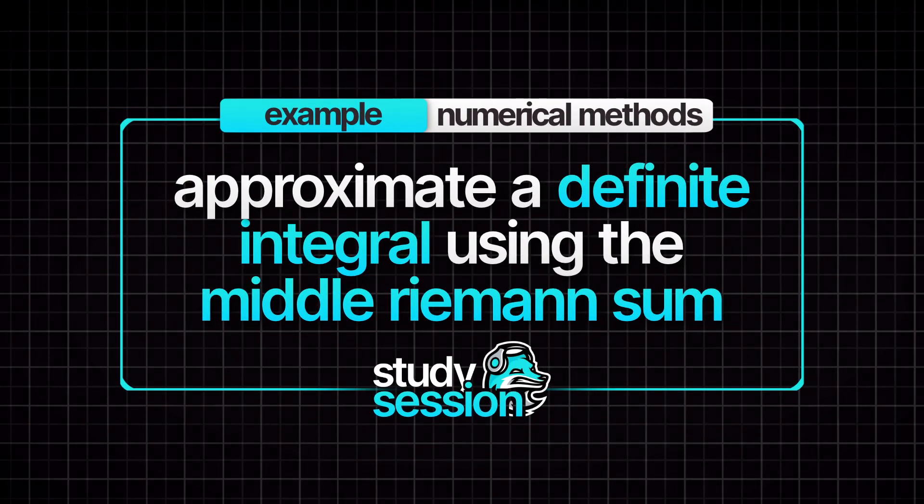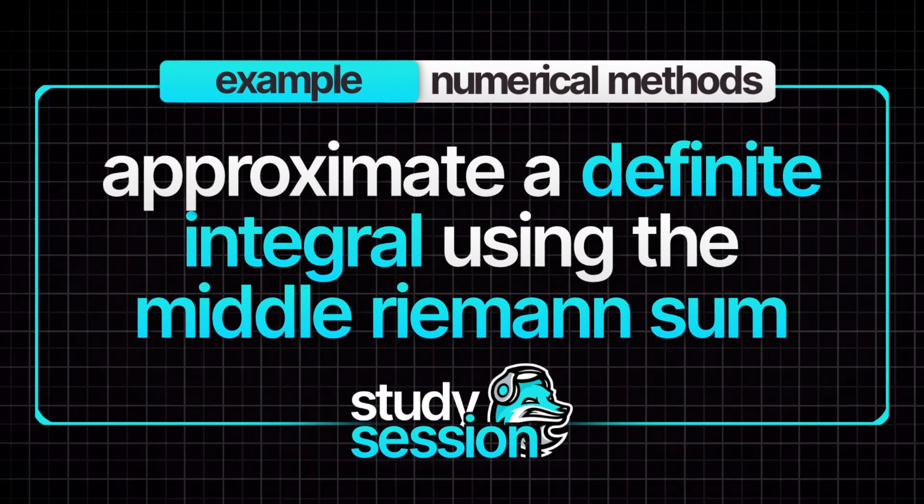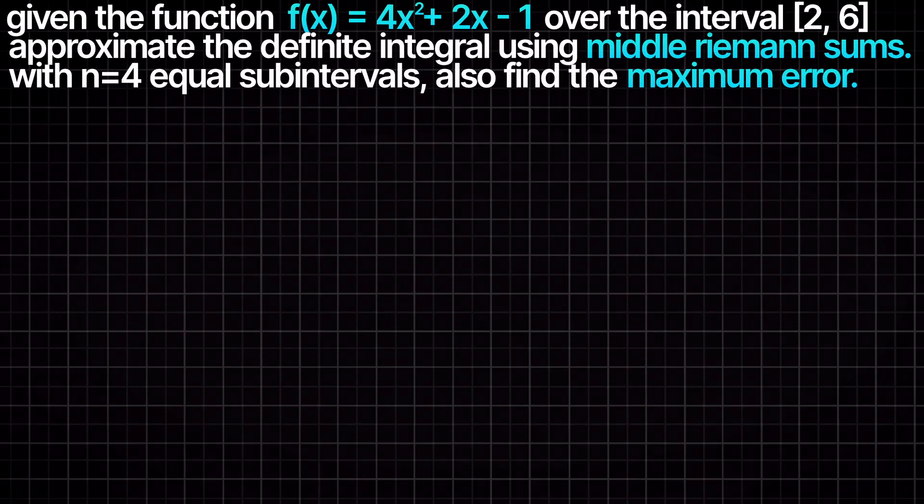Hey everyone, in this example video we are asked to approximate the definite integral of the function 4x squared plus 2x minus 1 over the interval of 2 to 6 using the Riemann sum method with 4 equal subintervals.